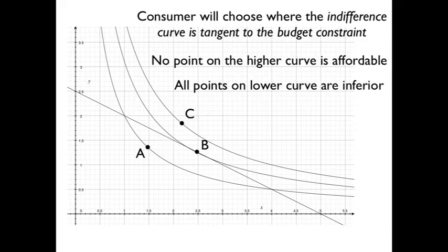And what we say about the bundle is that's the point where the indifference curve is tangent to the budget line. It's tangent because it just touches. All points on the lower curve are inferior. All points on the higher curve are unaffordable.